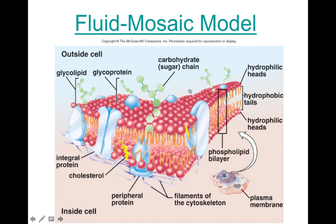You'll also see small amounts of cholesterol embedded in the membrane, which gives the membrane extra strength and support. There are also proteins embedded in the plasma membrane. Some molecules like oxygen are small enough to pass straight through the membrane, while others like glucose are too big and will take a protein channel instead — kind of like a bridge. If you see proteins only on the outside of the cell, those are called surface proteins.